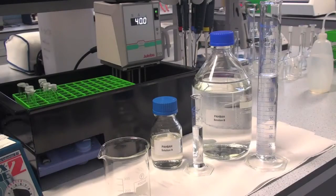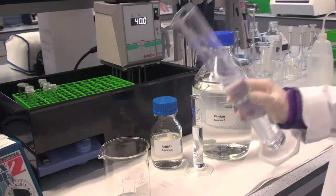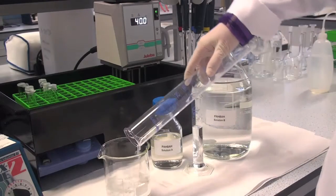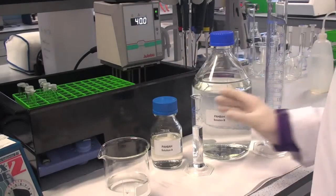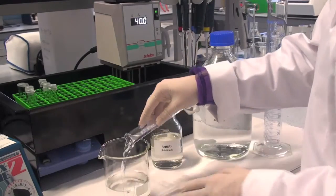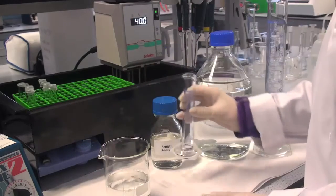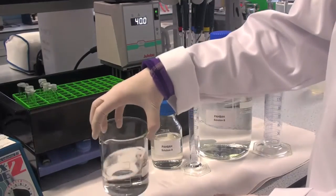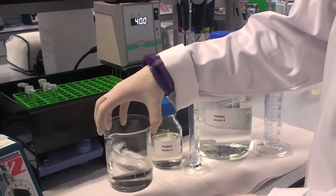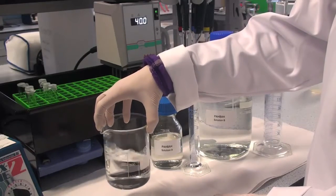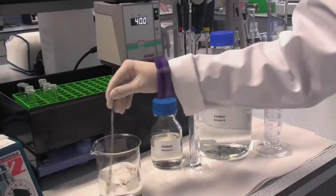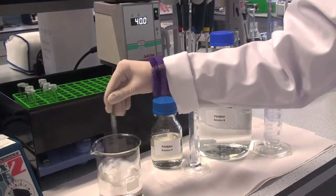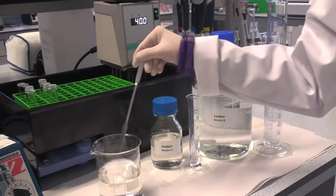Prepare PAHBAH working reagent immediately before use by adding 180 ml of PAHBAH solution B to a 300 ml beaker and then add 20 ml of PAHBAH solution A. Mix this solution thoroughly. This solution is stable for approximately 4 hours when stored on ice.